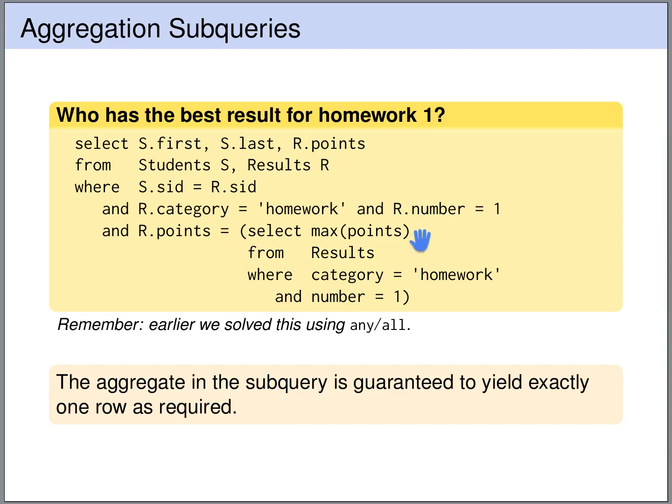In this subquery this is guaranteed because we have only one column, and due to the use of an aggregation we also have only a single row. So this query will return all the students that have the best result on homework1. Previously we solved this slightly differently — we used ALL or ANY to find the students with the best result on homework1.